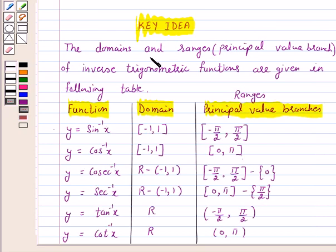This table shows the domains and ranges. It is the principal value branch of inverse trigonometric functions. So from this table we know that the range of the principal value branch of cos inverse is closed interval 0 to pi. So this is the key idea behind this question.